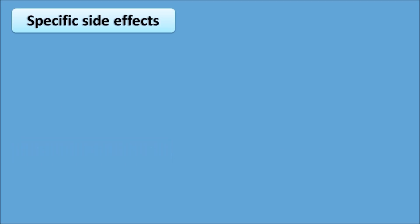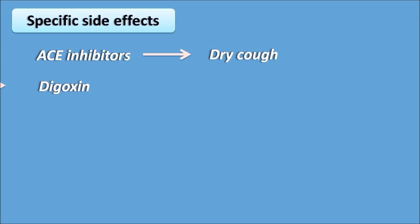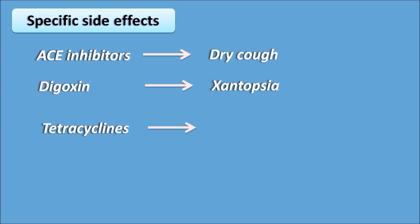Another type of unique point is specific side effects — side effects unique to a particular drug or its category. For example, ACE inhibitors produce dry cough because of the accumulation of bradykinin. Digoxin is a drug that produces xanthopsia, which is yellow color vision. Tetracyclines produce bone deformities by forming a complex with calcium in the bones, as well as dental hypoplasia.